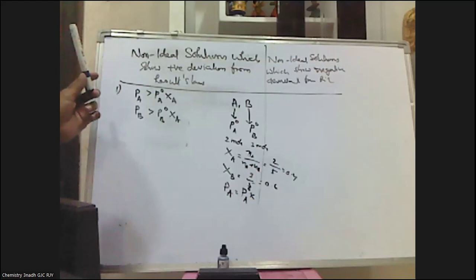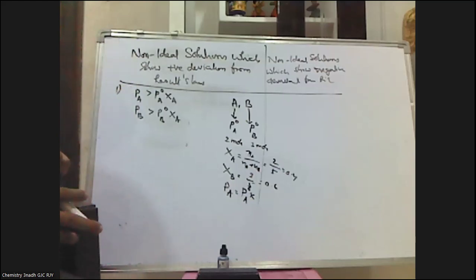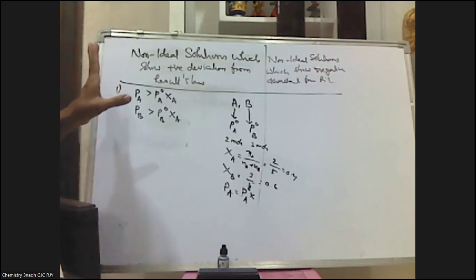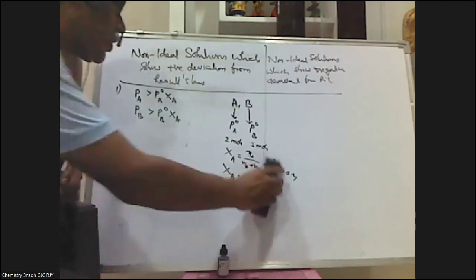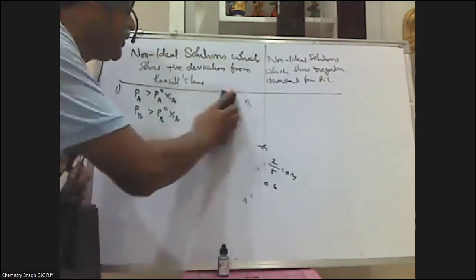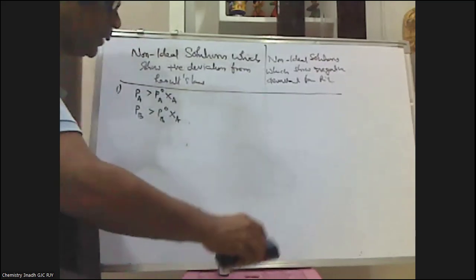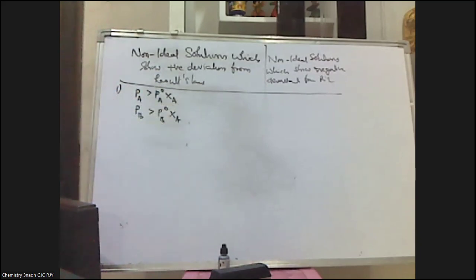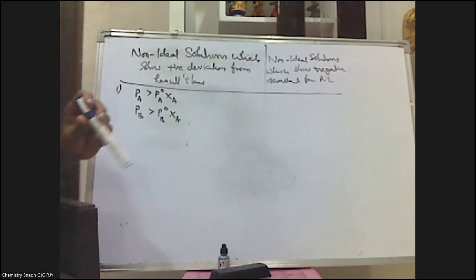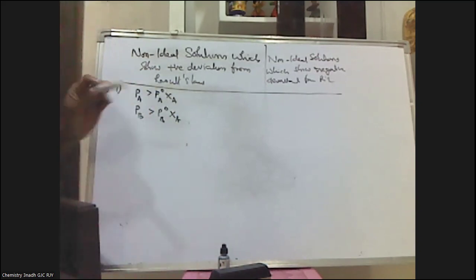The experimentally determined partial pressures are greater than those calculated values obtained by using Raoult's law. The experimentally determined values are always greater than the Raoult's law calculated values. This is the first characteristic point of positive deviation.